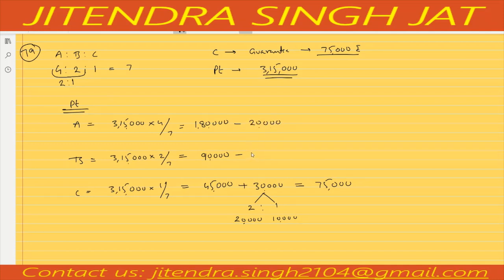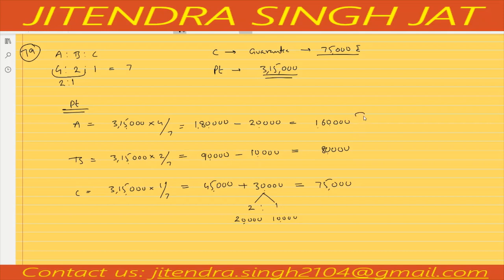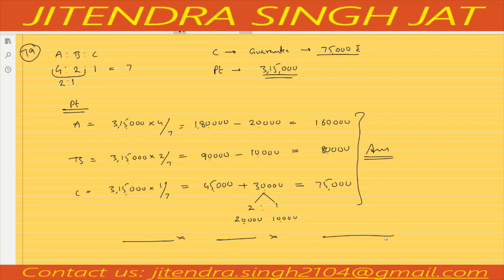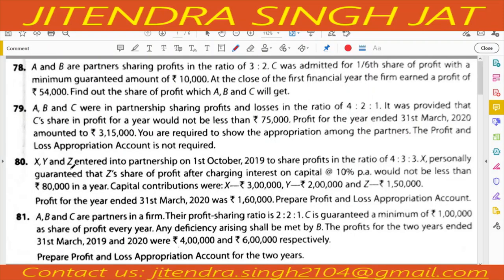So A will give 20,000 and B will give 10,000. A's share becomes 1,60,000, B's share becomes 80,000, and C's share is 75,000. I hope this question is clear to everyone.